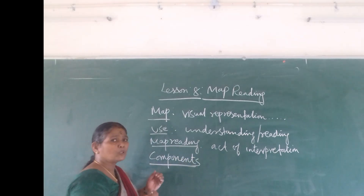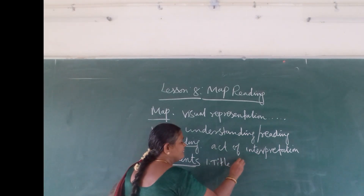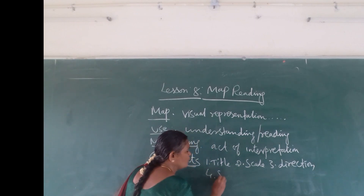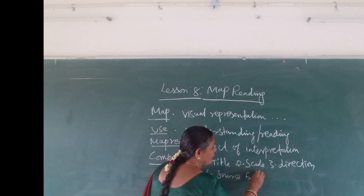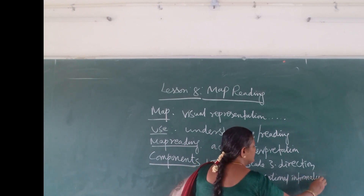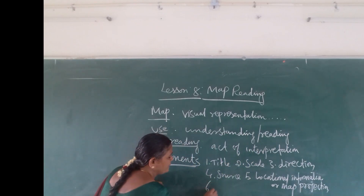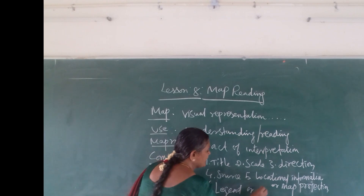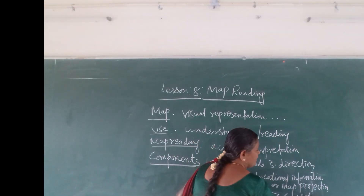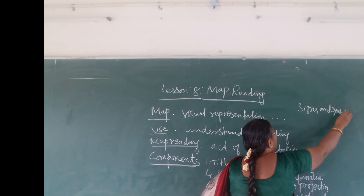To be able to read a map, there are many components that are necessary. First, title. Second, scale. Third, direction. Fourth, location — or locational information, otherwise called map projection. Fifth, legend or key. Sixth, conventional signs and symbols.